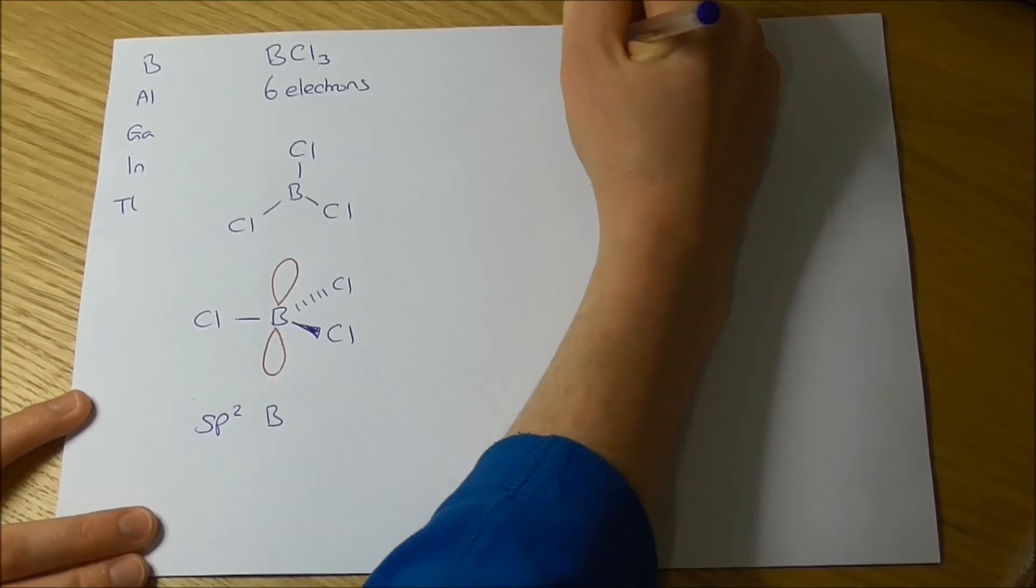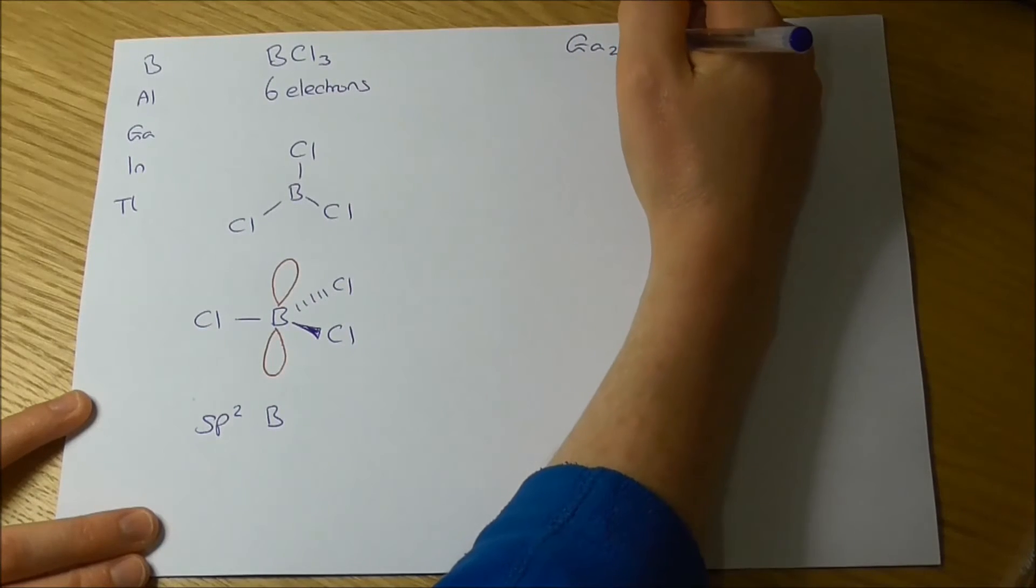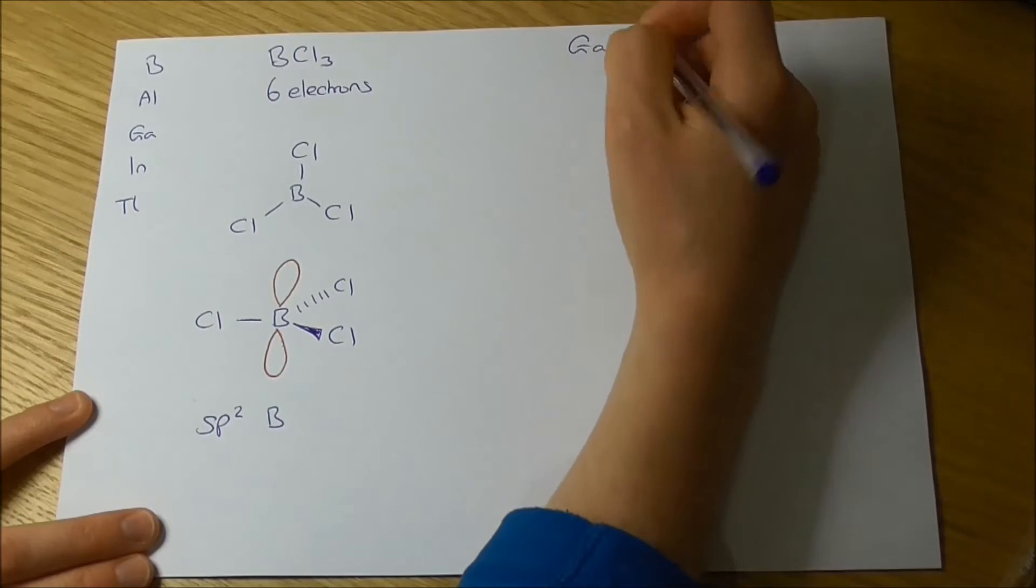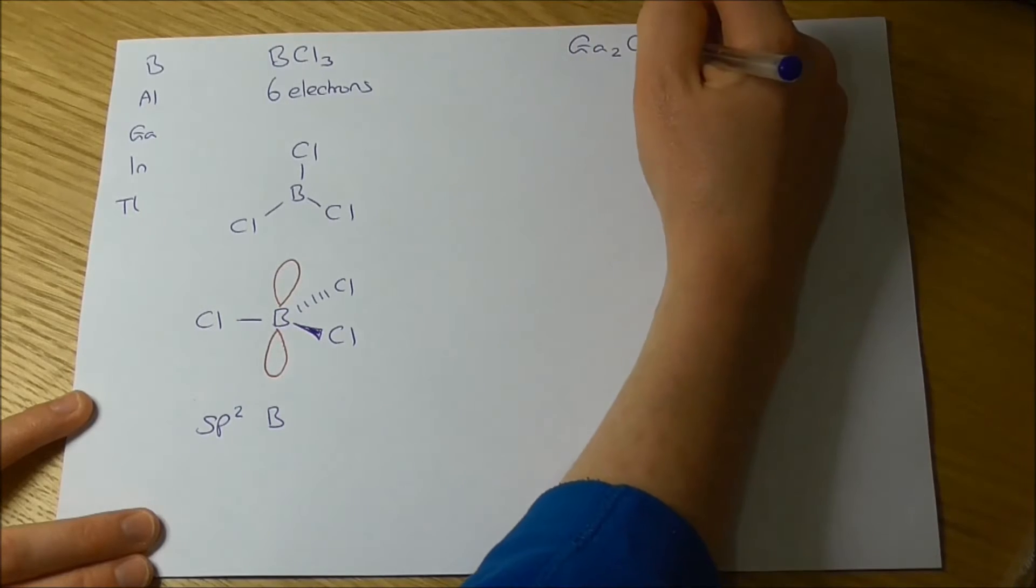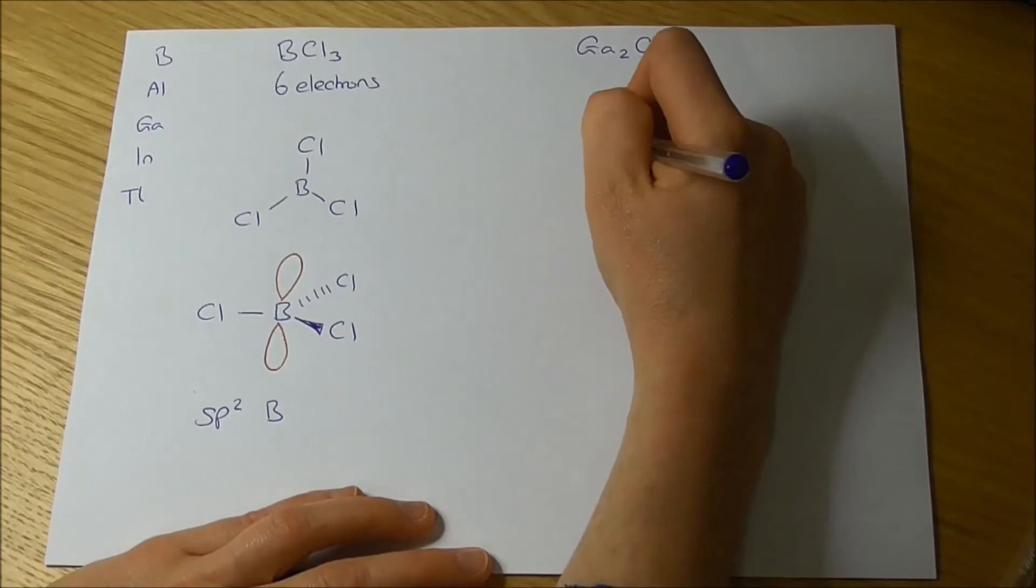So if we consider gallium as an example, gallium as well as these other elements further down group 13 forms dimers. So instead of being GaCl3, it's Ga2Cl6. And the structure of this molecule is that instead of having trigonal planar gallium...